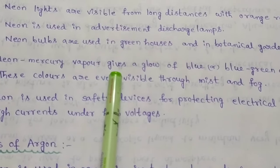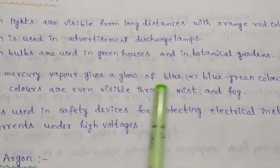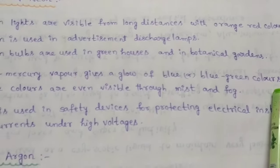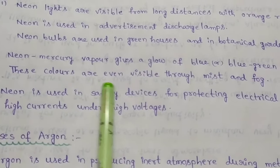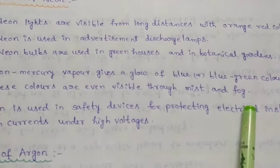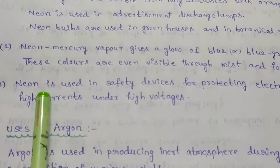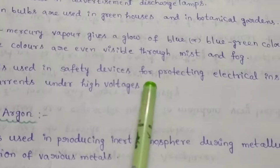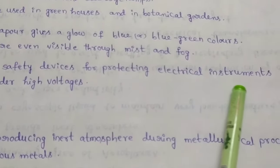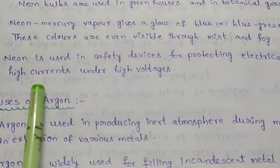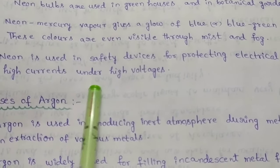Neon mercury vapours give a glow of blue or blue-green colours. These colours are even visible through mist and fog atmosphere. Neon is used in safety devices for protecting electrical instruments because it carries high currents under high voltages.